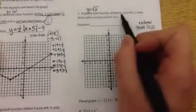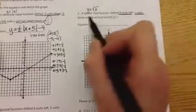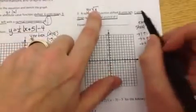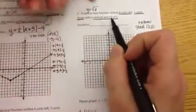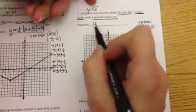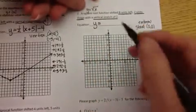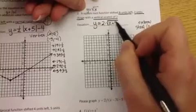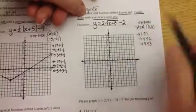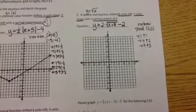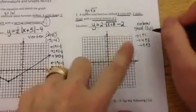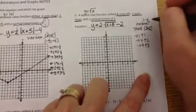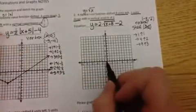Now let's look at our transformations: shifting 8 units left, 2 units down, vertical stretch of 2. My left goes inside with my x, down goes outside at the end, and vertical stretch of 2 goes out in front multiplied. So when I rewrite my equation with transformations, I get y equals 2 times the square root of x plus 8, minus 2. So I'm no longer starting at (0, 0) — I have to shift 8 left and 2 down, so I start from negative 8, negative 2.